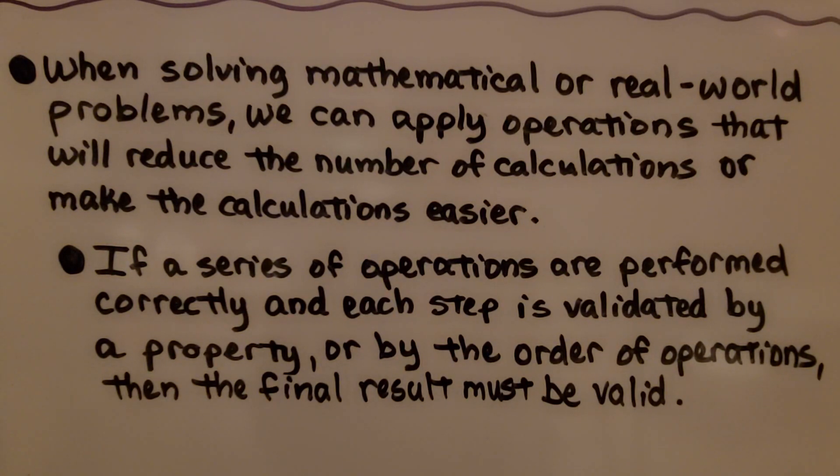If a series of operations are performed correctly and each step is validated by a property or by the order of operations, then the final result must be valid.